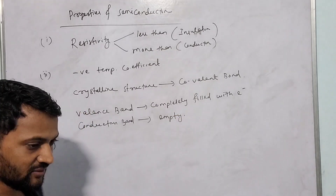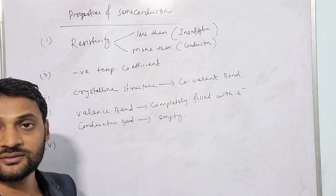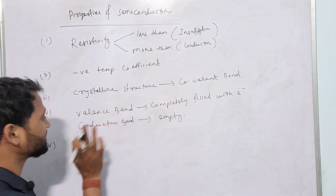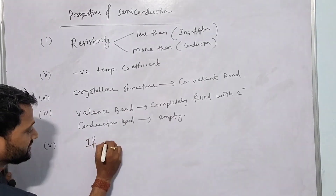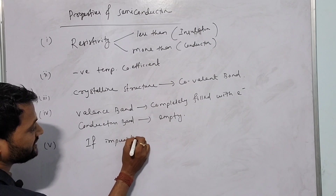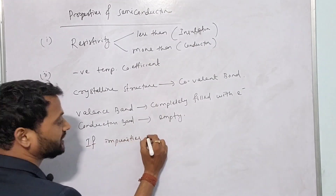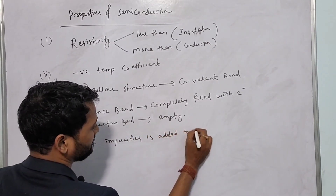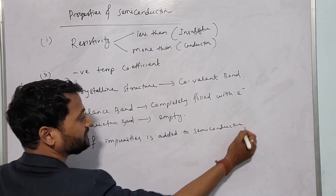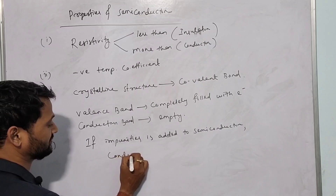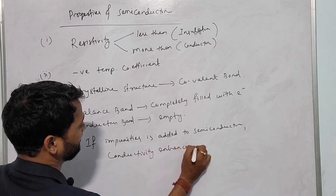The fifth point is very important. When impurities are added to the semiconductor, the conductivity enhances. I will discuss in detail what impurities, doping, and dopants are. If impurities are added to a semiconductor, suddenly what happens? Conductivity enhances — it can conduct easily.